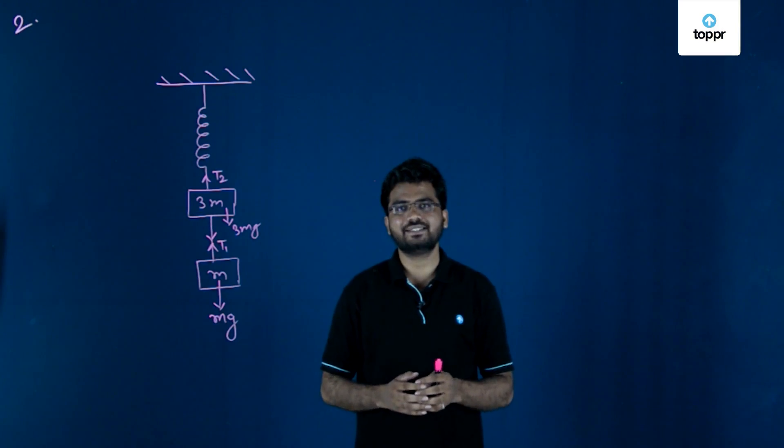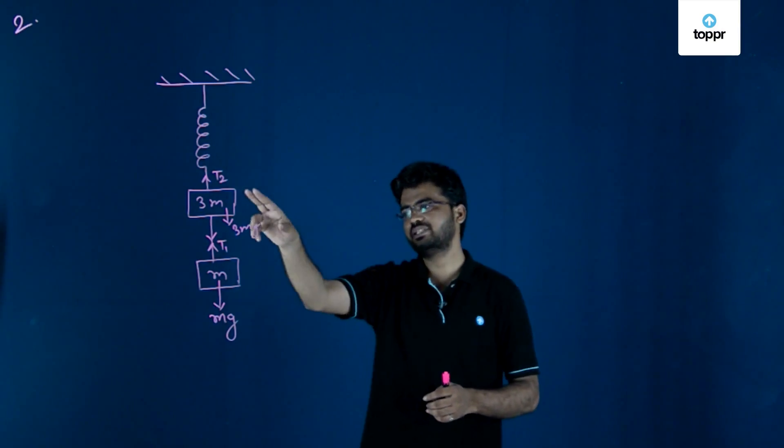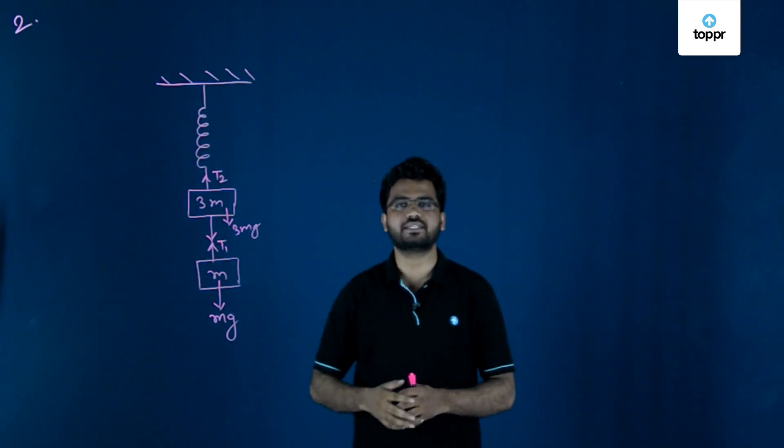In this question, you have to find the acceleration of mass m and 3m when the string between 3m and m is cut.